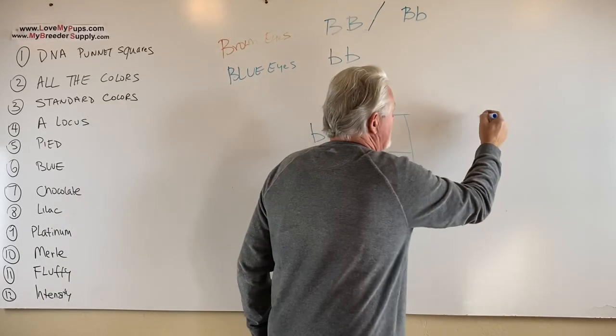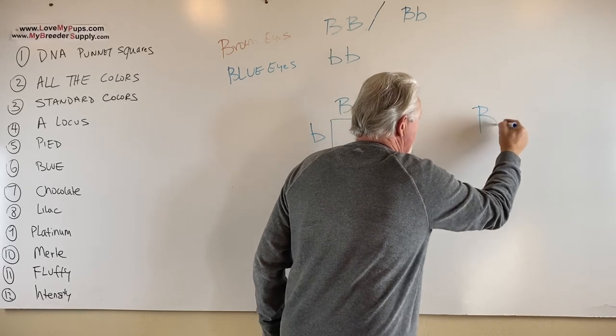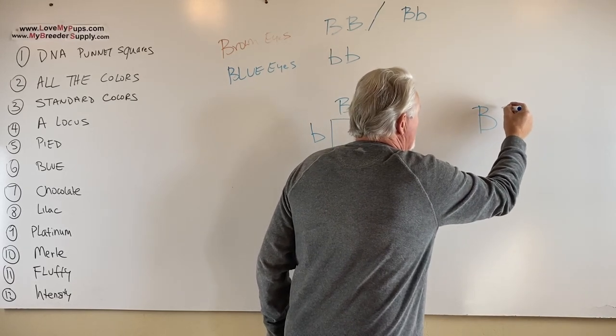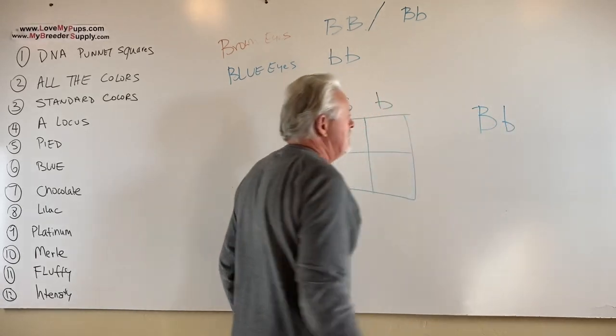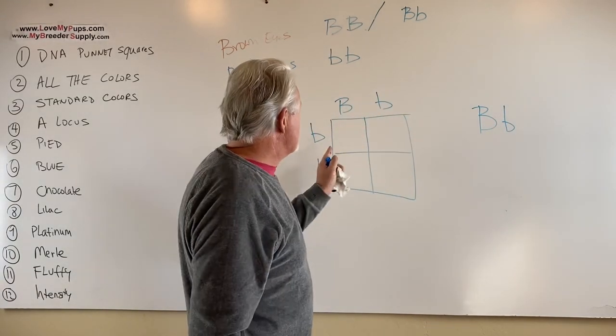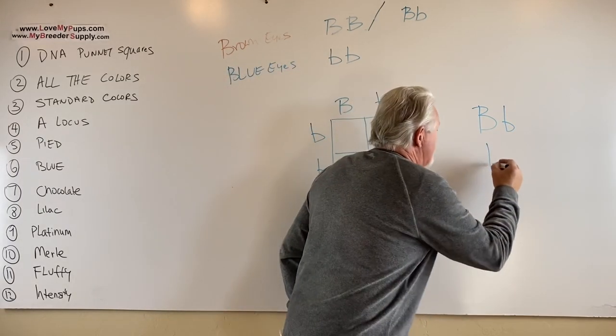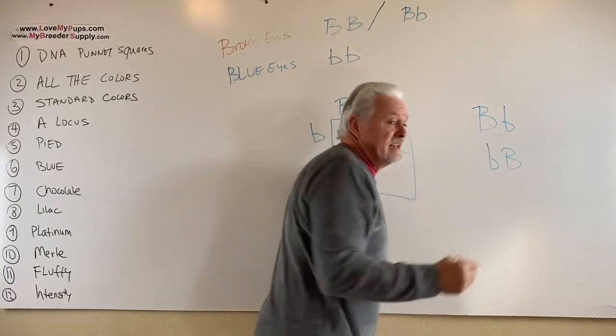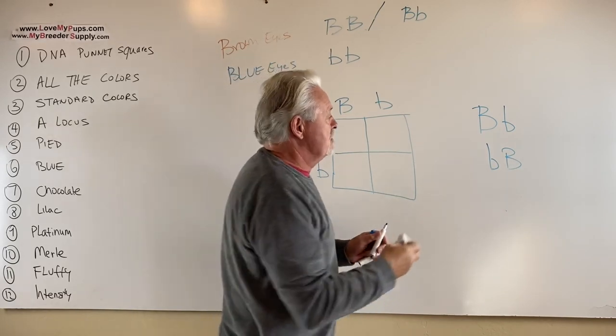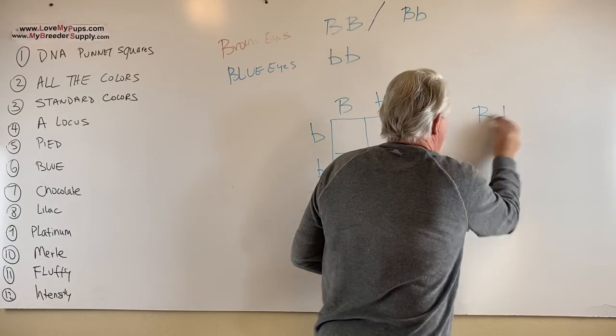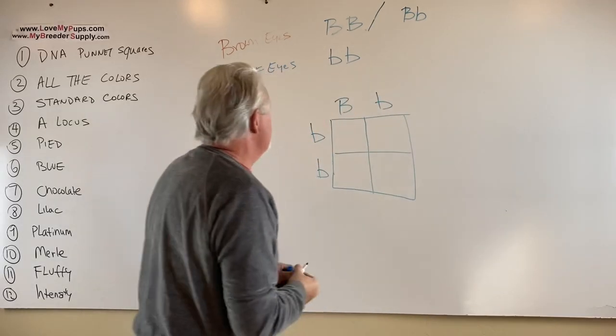And typically when you show something, you show the dominant gene first, and then if there's a, excuse me, a dominant gene first, and then a recessive gene afterwards, that would be the way that you write me. Now, if you wrote it down like this, it's exactly the same thing. There's no order that matters here, but it's just from convention, you put down the dominant gene first. Okay. So here's me and Tammy.